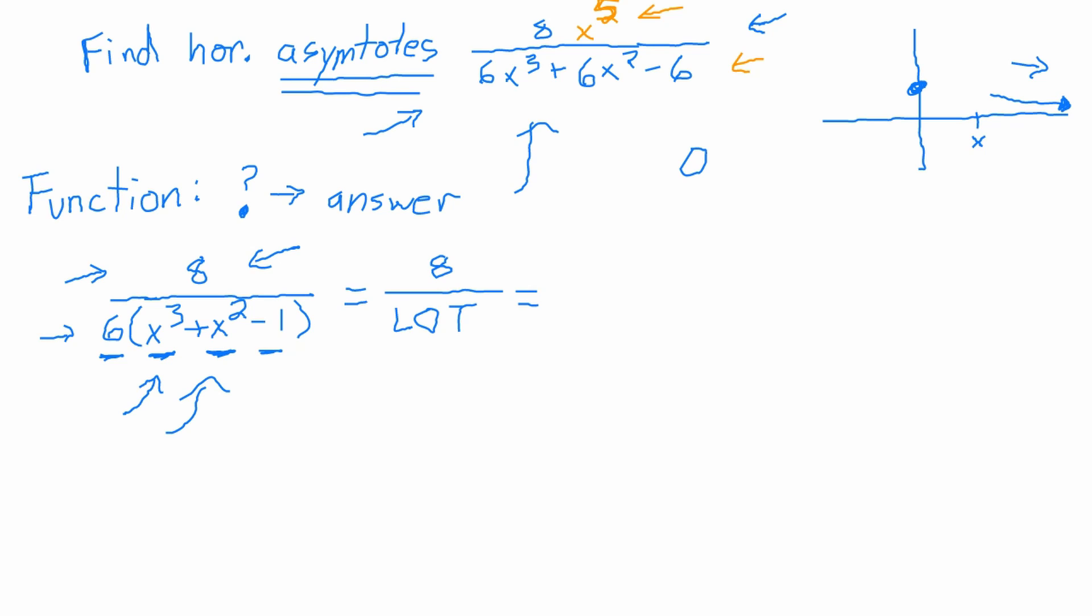But thankfully we have a technique for doing that. We do our polynomial long division, right? Which can be a little bit of a burden, but it will tell me exactly how I'm going to divide these eight and five million to the fifth cookies amongst everything else. We just do our polynomial long division.